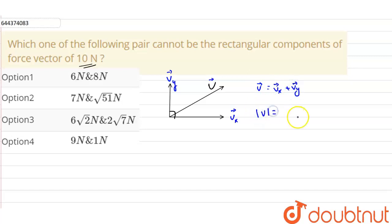The magnitude of v vector will be equals to under root of vx square plus vy square, or what we can say that v square is equals to vx square plus vy square.